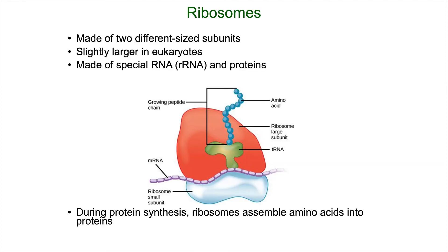Finally, ribosomes is the last thing all cells have in common. Ribosomes are made of RNA and proteins, in two different subunits that are separated from each other when not making proteins. In a later chapter we'll see how the ribosome reads a piece of messenger RNA — which carries a transcription of the gene — and uses that to build a growing polypeptide chain of amino acids. For now, it's enough to understand that ribosomes are the organelle responsible for building proteins, or protein synthesis.